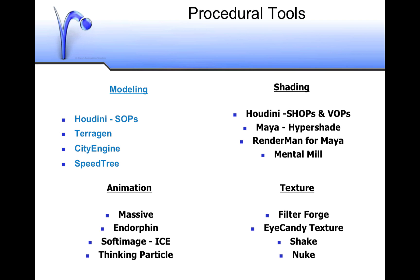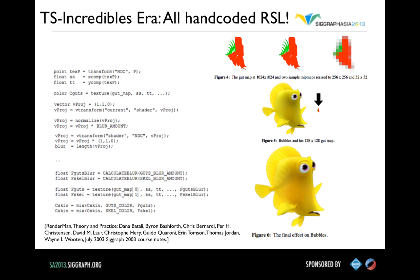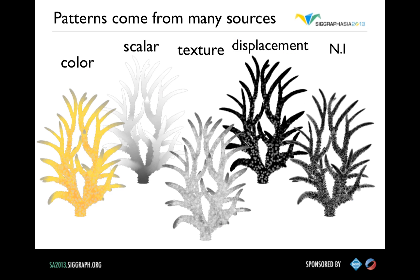We're going to focus on RenderMan, though Houdini and other tools also support procedural workflows. At Pixar, from Toy Story to Incredibles, all of our shaders were hand-coded in RenderMan's shading language — RSL code, like what was used for Finding Nemo. We pretty much just programmed our shaders during that time.